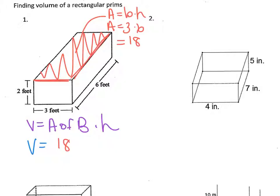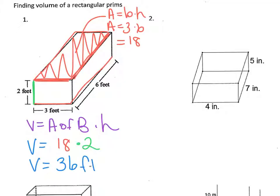Now we have to find the height of the figure. The height is, if you set the figure on the base — which this one is sitting on the bottom — how tall would it be? In this figure, the height is 2. Another way to look at height is it's the distance between the bases. If you think of the base as the bottom rectangle and the top as the other base, how far apart are they? In this case, it's 2 feet apart. So, 18 times 2 is 36, and the units would be cubic feet.